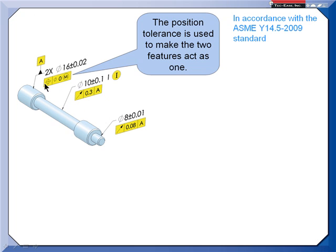One way is to use position. In the past, this has been a problem because the 1994 revision of the standard said that with position, you had to have a datum reference, even though the composite section showed support for position tolerance without a datum reference in a second segment of a composite.